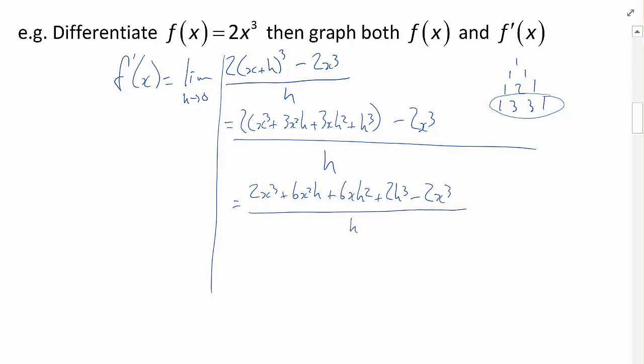Of course, we've got 2x cubed and minus 2x cubed, and those can cancel. And then these remaining terms all have a common factor of h, so I can reduce this down simply to 6x squared plus 6x h plus 2h squared. And what is the limit of this as h approaches 0? That limit, which is f prime of x, is simply equal to 6x squared because both of these terms will become 0.